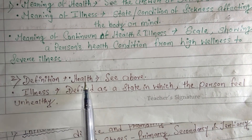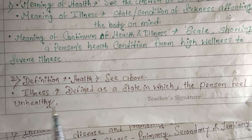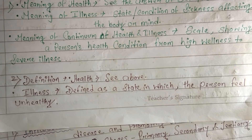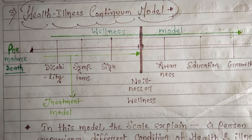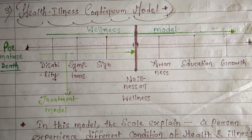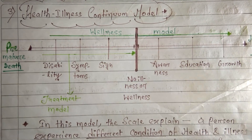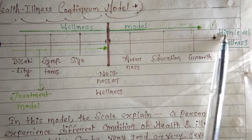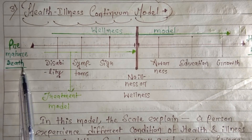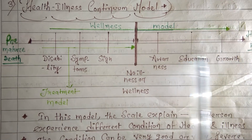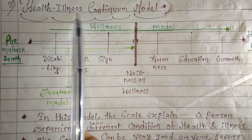I have already told you the definition of health. Now let's see the definition of illness: it is defined as a state in which the person feels unhealthy. So this is the health-illness continuum — a scale where one side shows a high level of wellness and the other side shows premature death, meaning a very severe condition. A person is either healthy or very ill, and this scale is called the health-illness continuum model.